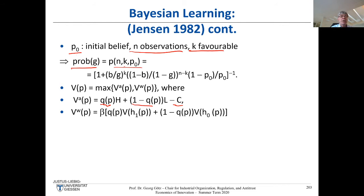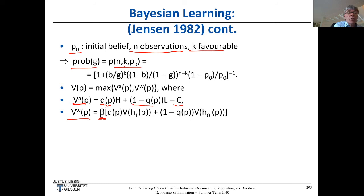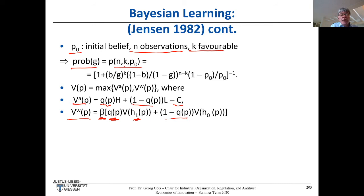The alternative is not adopting now but waiting one more period for the next signal. If I wait, I must discount future gains by factor β. In the next period, I receive a signal that is positive with probability Q (the probability of high profit), and then the value with the updated belief. With probability (1-Q), I receive the bad signal and get the corresponding value.